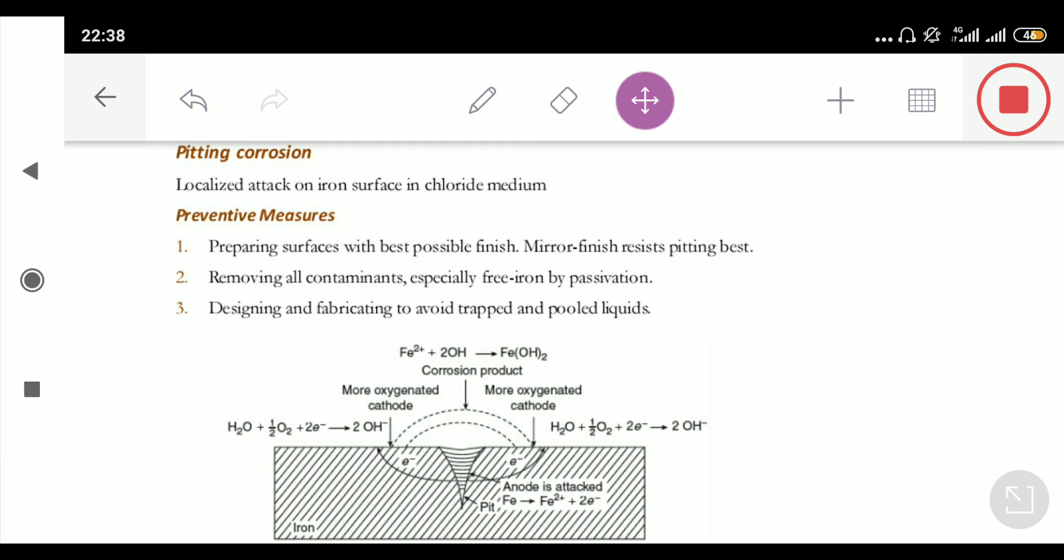But in case of pitting corrosion, it is a bit different from the differential aeration corrosion. Because in this case, the metal is not dipped in any electrolyte. So, what happened in this case, then if there is a scratch on the metal, so that scratch behave as a pit or that behave as a trough.